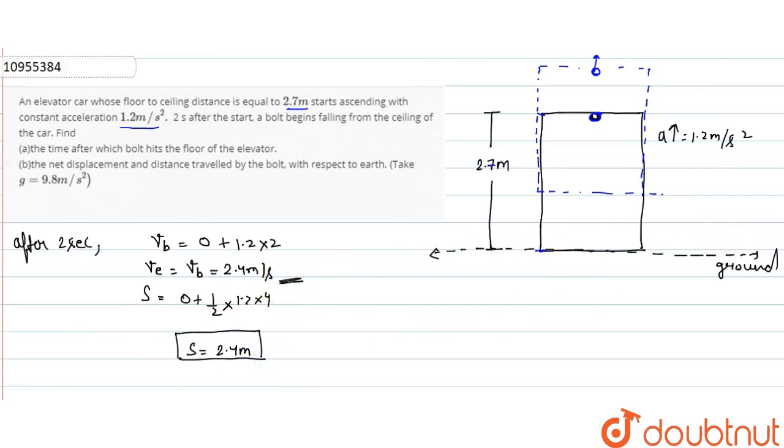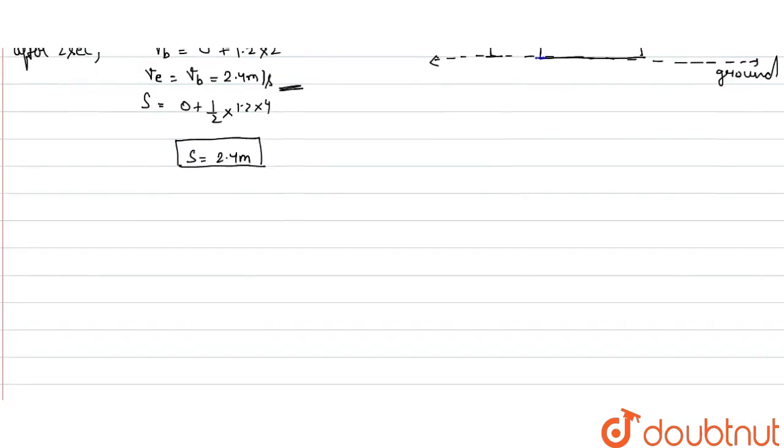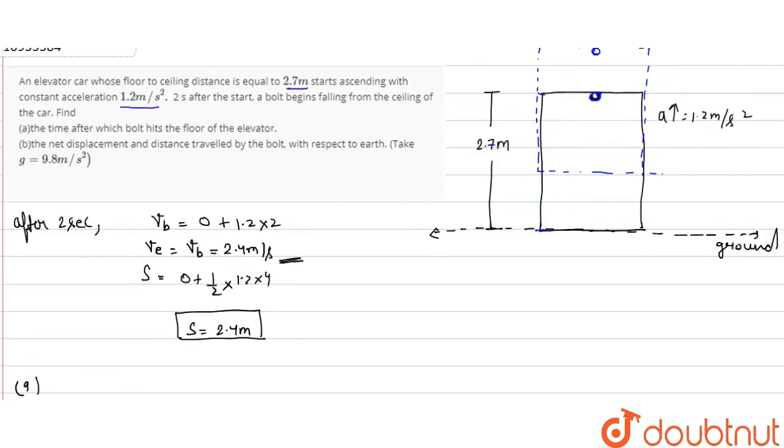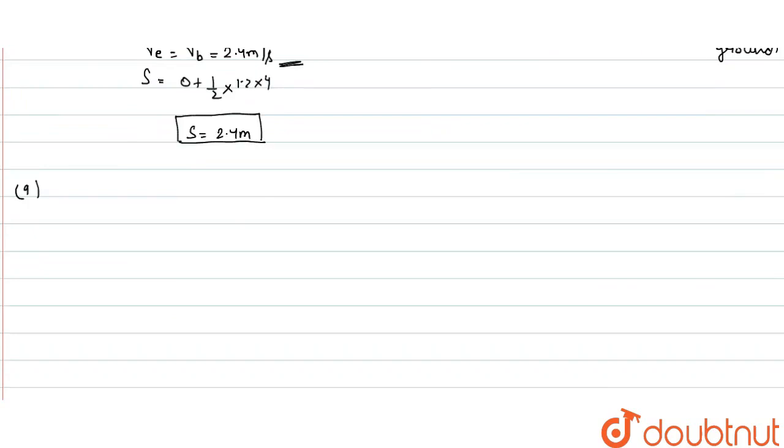Velocity here, we have some velocity here. Now the question is different. We have to find the time when the bolt hits the elevator floor. This time what will happen? Diagram here...